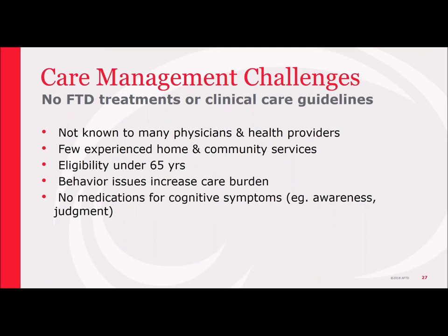There are no treatments or even clinical care guidelines for FTD at this point in time. There's still a lack of public awareness. Folks may not get the right type of neurological evaluation for some time. Home and community services available, while good with general dementia understanding, may not know how to apply those principles to someone with different behaviors, intact memory, and a younger onset. There are issues around eligibility for services for people younger than 65. The presence of behavioral issues increases the care burden and need for support. The lack of medications for cognitive symptoms — the loss of awareness and decline in judgment — is a key factor in figuring out the most appropriate care plan.